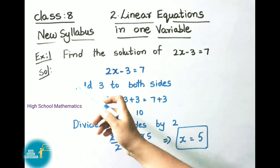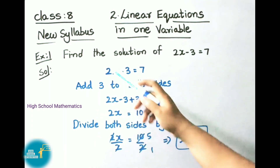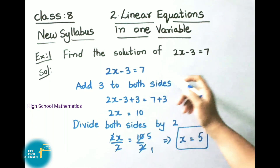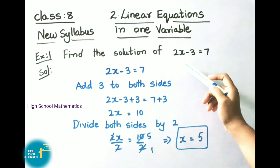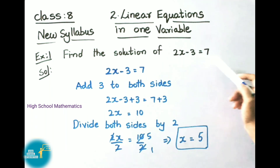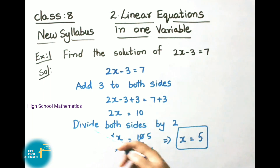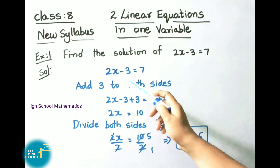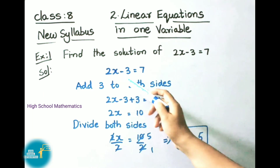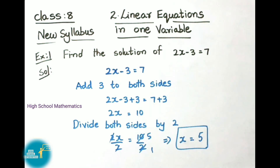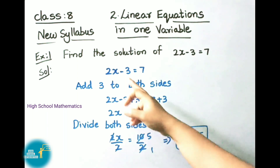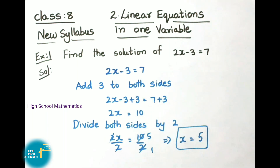Let us see example 1. Find the solution of 2x minus 3 equal to 7. Let us see the solution. The given equation is 2x minus 3 equal to 7. Here in this question we need to find the x value.